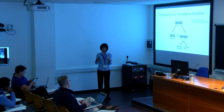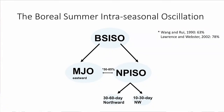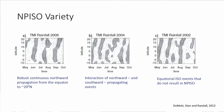For the Boreal summer intraseasonal oscillation, we have far more mechanisms proposed than for the MJO, and the relative importance is still not sorted out. The northward propagating oscillations have two components: one is a 30-60 day component with pure northward propagation, and another with a period of about 10-30 days that propagates northwestward. Here are three examples of NPISO events. One from 2008 shows robust northward propagation from the equator all the way to 20°N. Another event shows propagation both northward and southward — a mixture. A third event shows oscillations initiated in the equatorial region that don't manage to propagate.